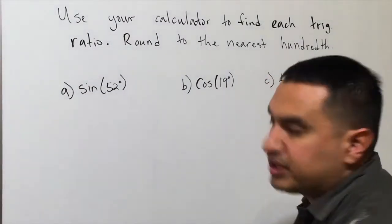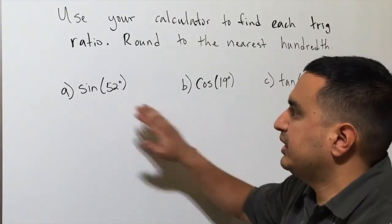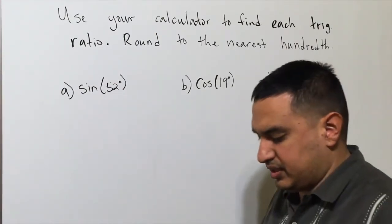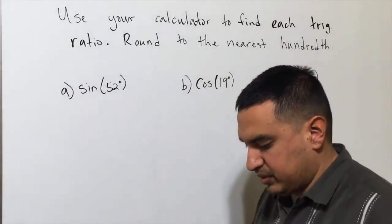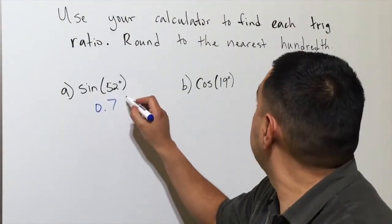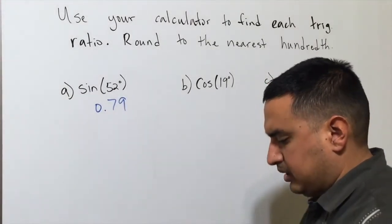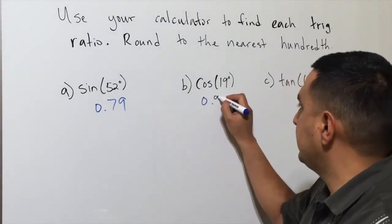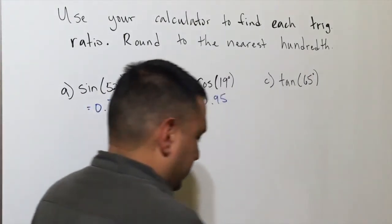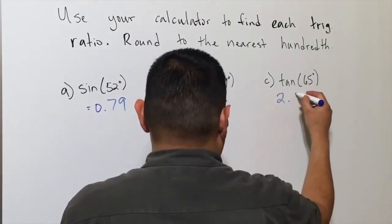For this next section you'll use your calculator — the only thing to remember is to change your settings to degrees. Sine of 52° ≈ 0.79, cosine of 19° ≈ 0.95, and tangent of 65° ≈ 2.14.